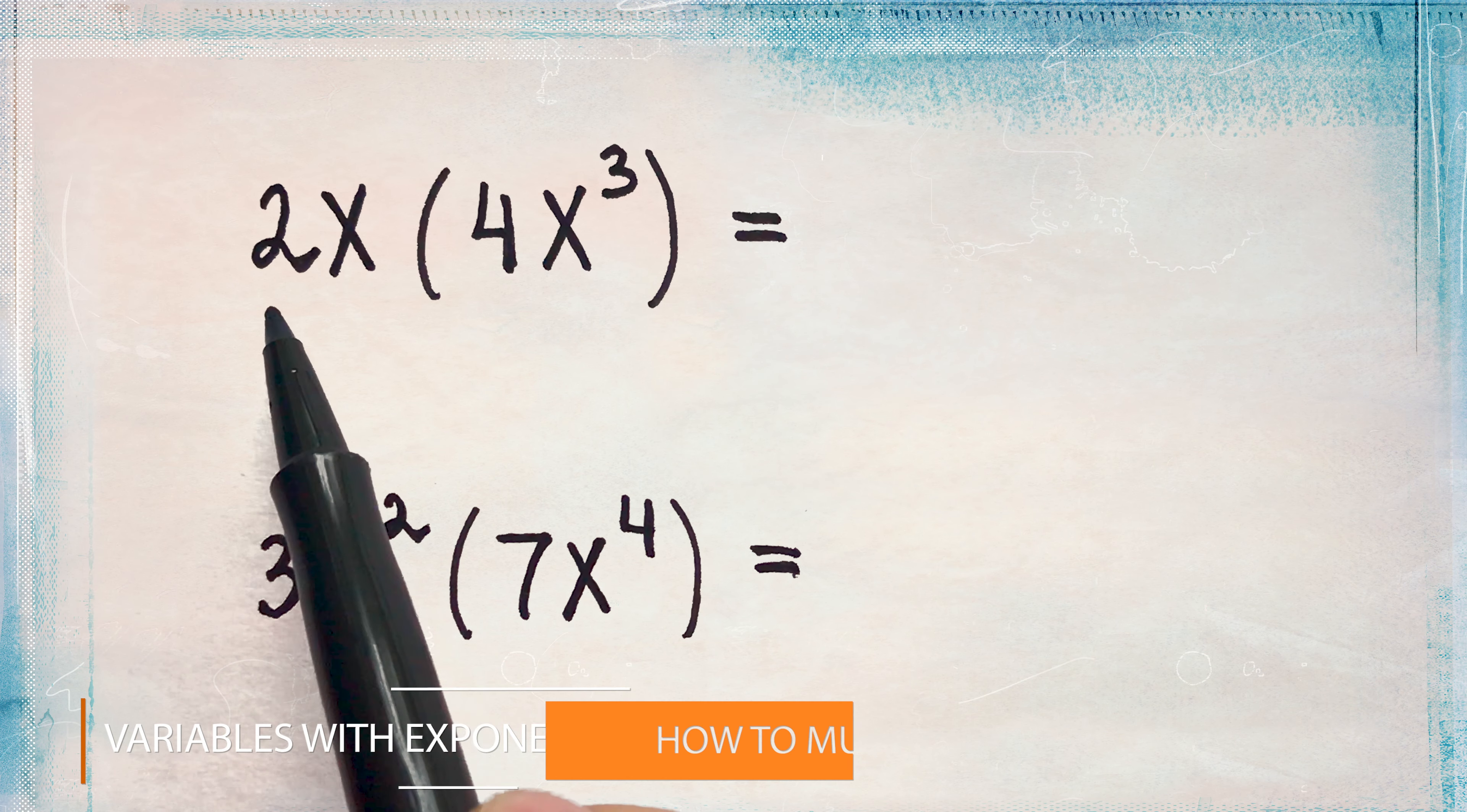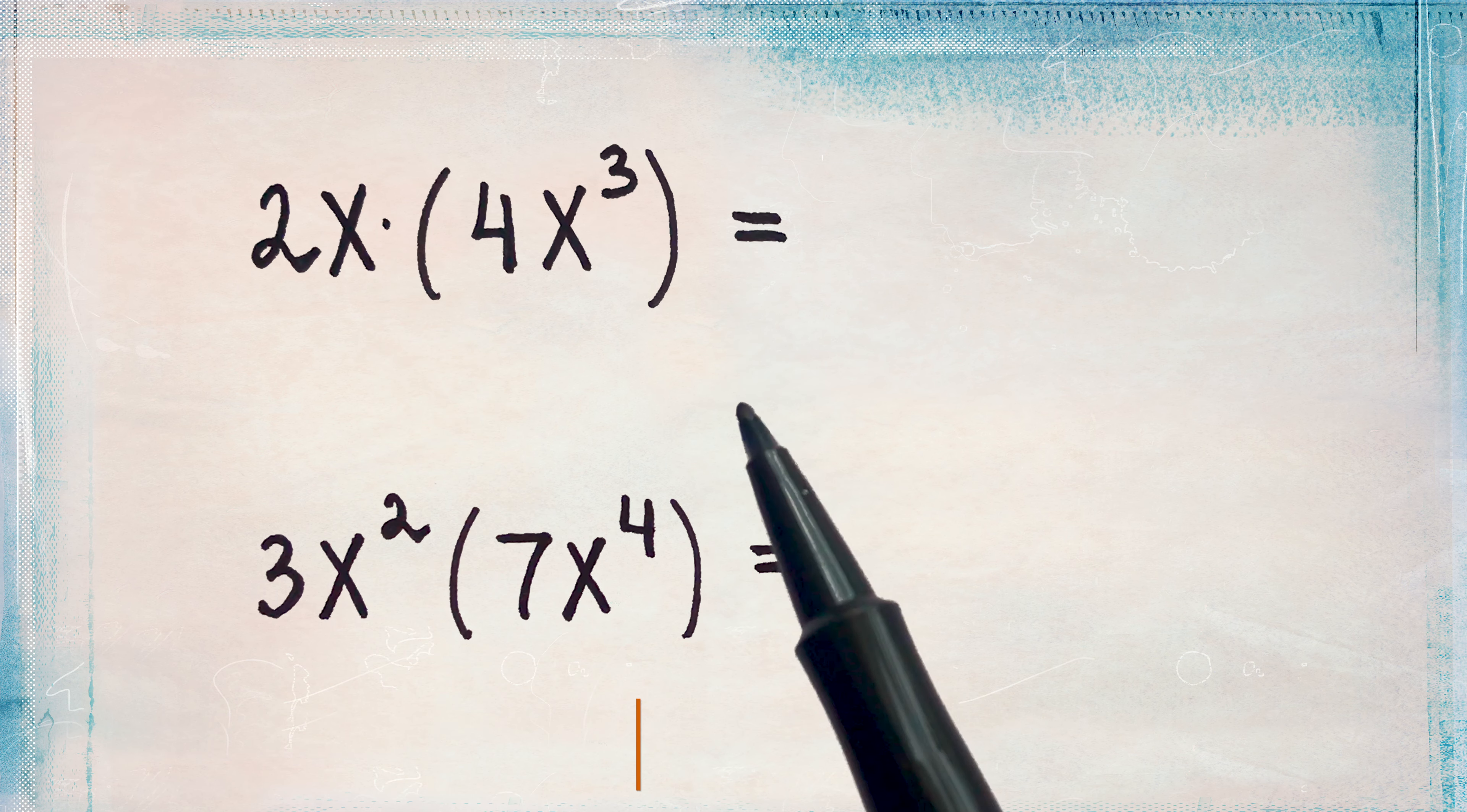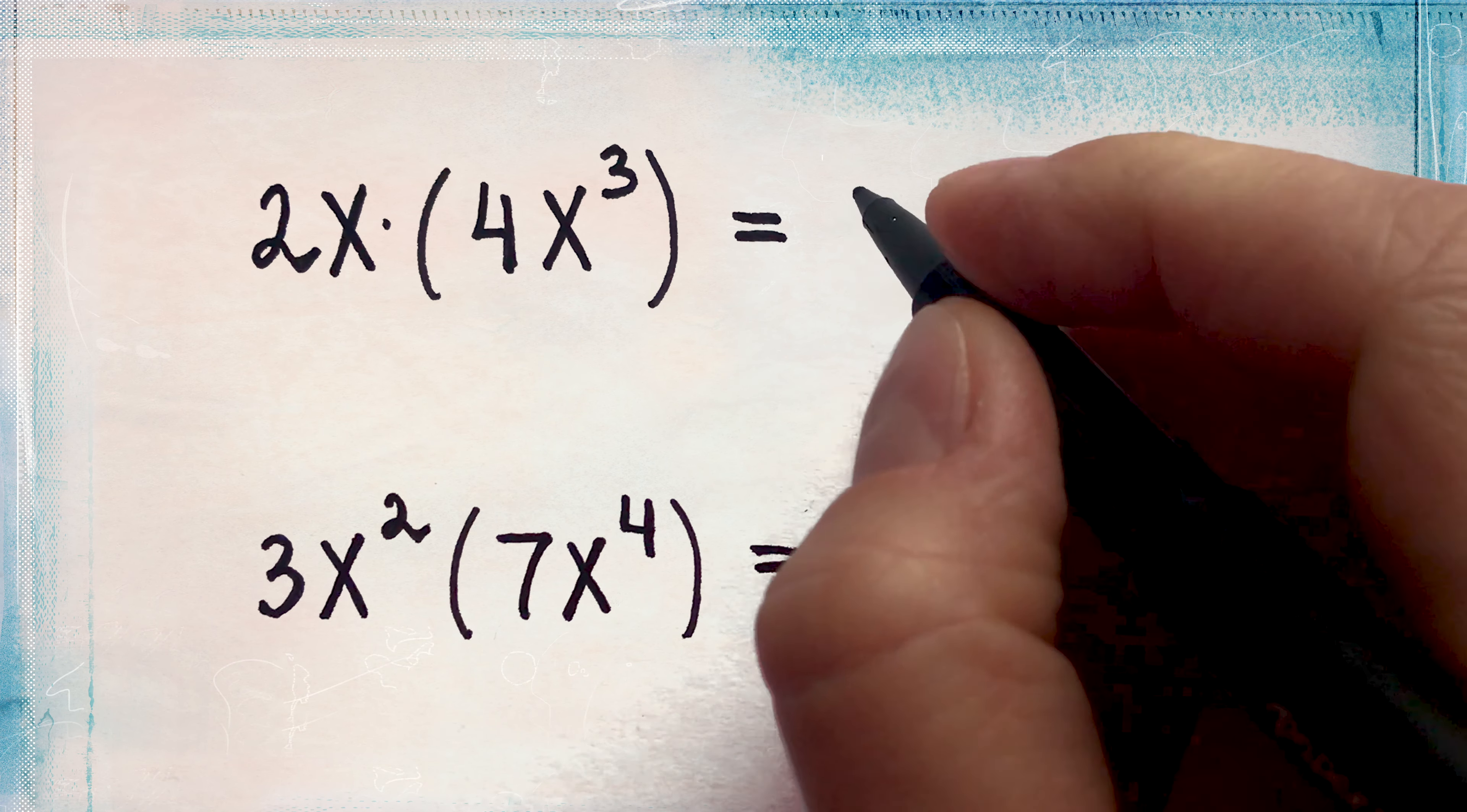Thank you for watching. Here we have a mixture of numbers and variables that we have to multiply together. When you see a problem like this, first multiply the numbers together. 2 times 4 is 8.